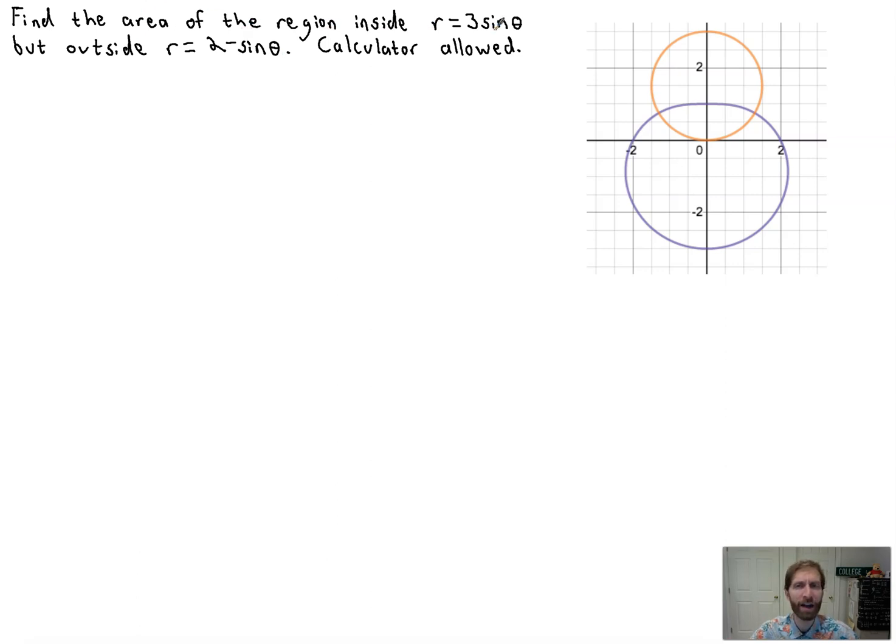Find the area of the region inside r equals 3 sine theta, that's this thing, but outside r equals 2 minus sine theta. So that would be the area of all of this stuff here, right? I'll just kind of scribble that in. That's the area inside that, but outside 2 minus sine theta. So how do we get there?